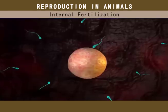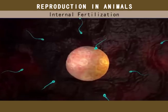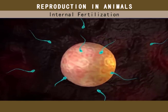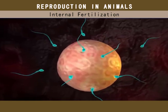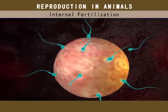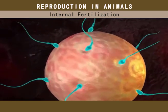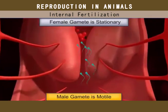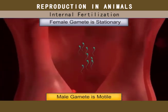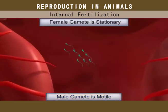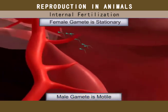Internal fertilization involves the fusion of male and female gametes inside the body of the female. It is found in most land animals, birds, reptiles, and insects.